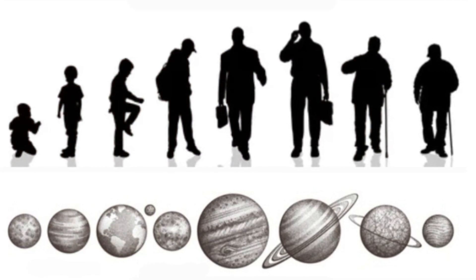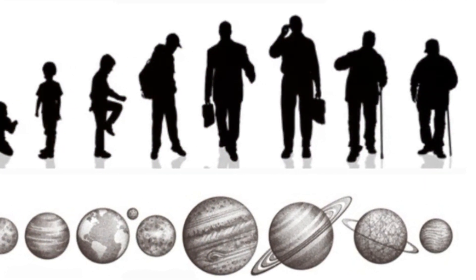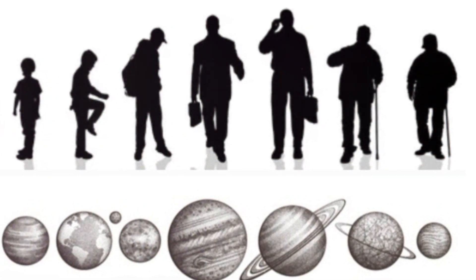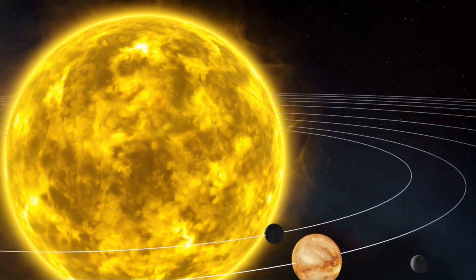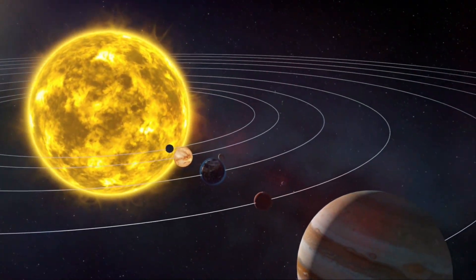Imagine, if you will, that all planets are simply Earth evolving in time. That's the premise of the uniplanetary evolution theory, a captivating idea that proposes a fascinating twist on our understanding of the cosmos. This theory suggests that each planet in our solar system is, in fact, Earth at different points in its life cycle.